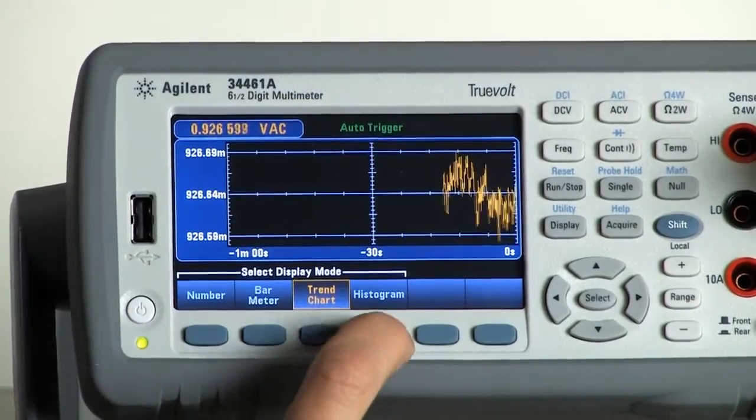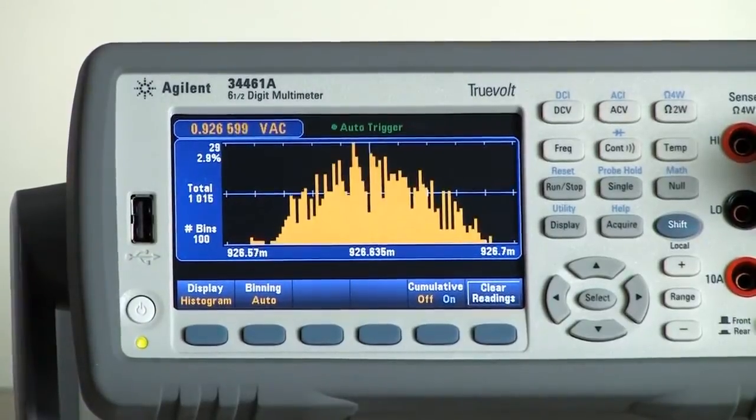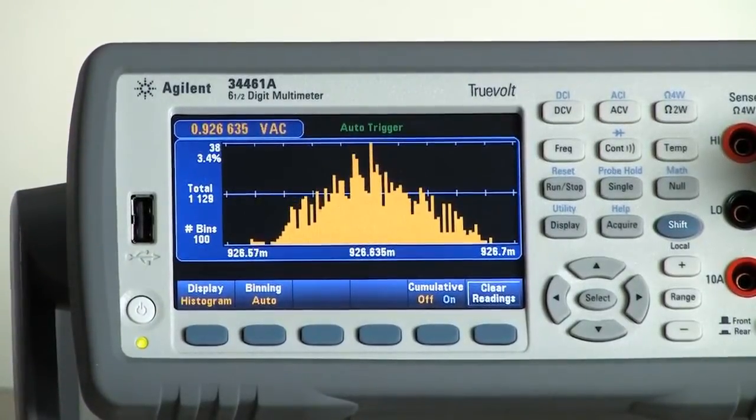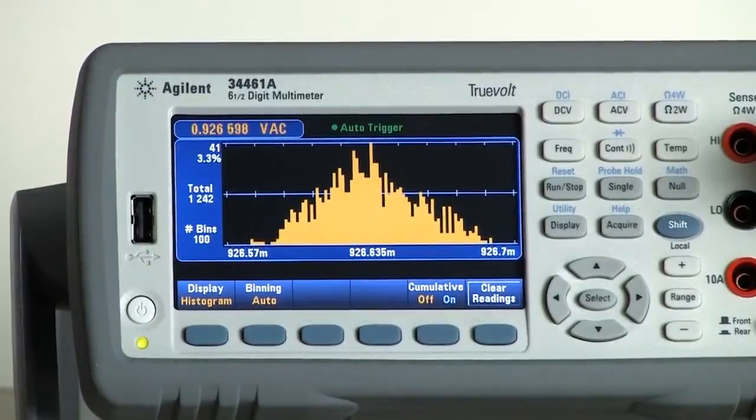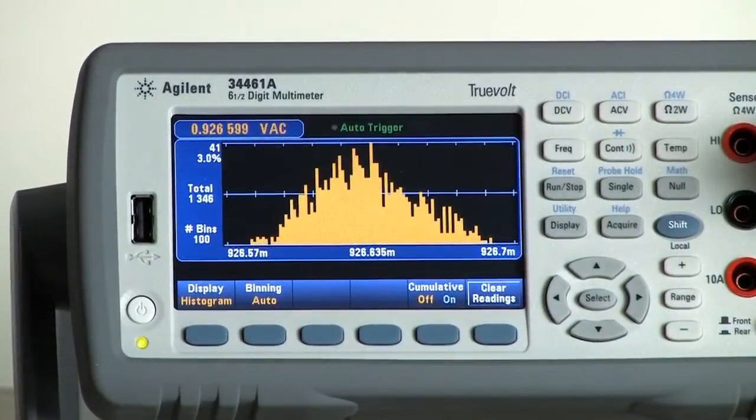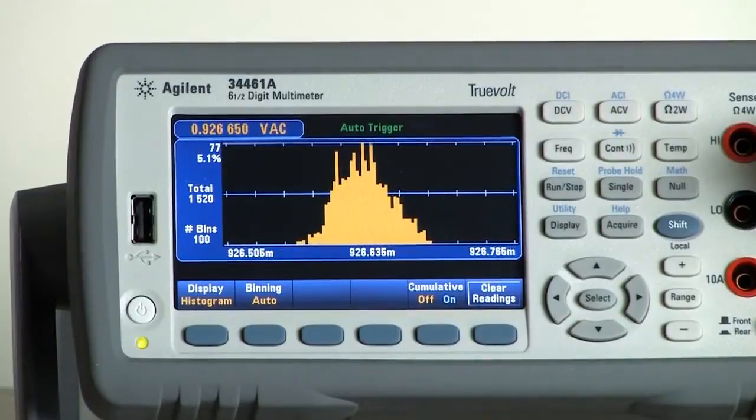The final view that we have available is the histogram. So if you want to see a distribution of your data over a period of time you can collect all of the data in a histogram view and see what's happening statistically with your measurements.